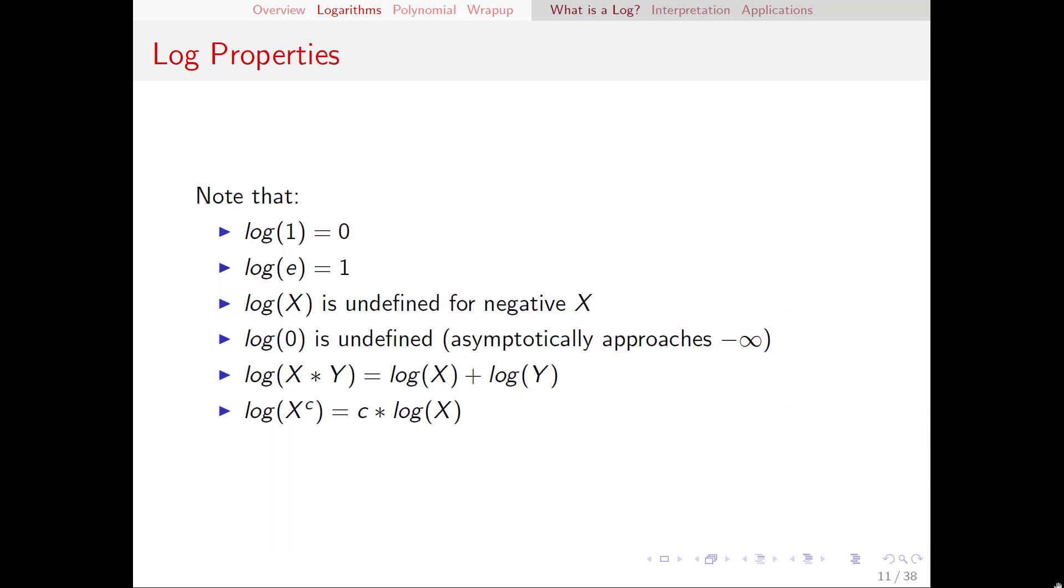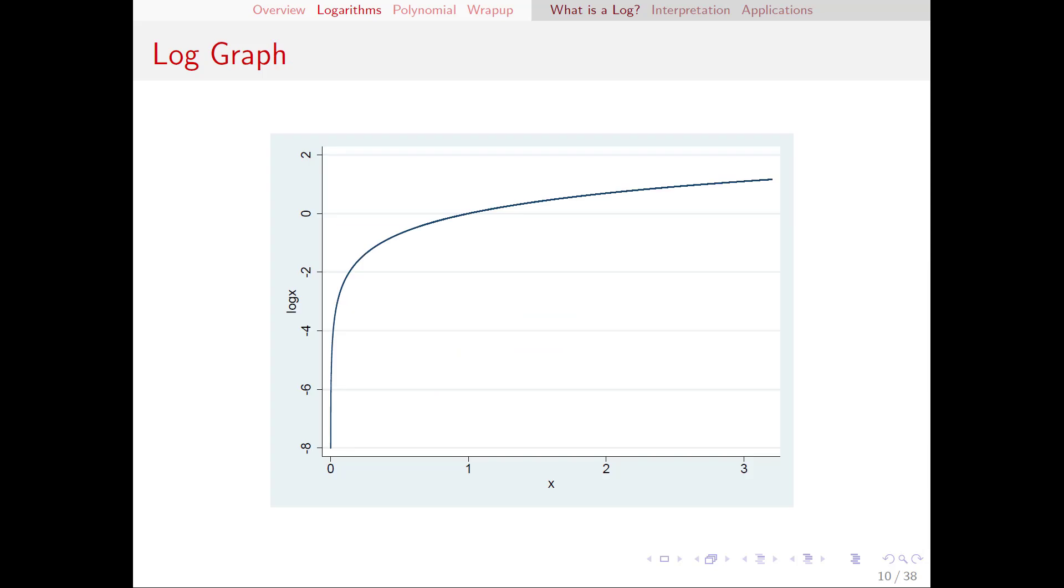There are a few special properties of the log that are worth knowing. First the log of 1 is 0. Why is that? Well because e to the 0 is 1 just as any number to the 0 power is 1. And if we look on our graph we can see that at 1 this corresponds with a value of 0.